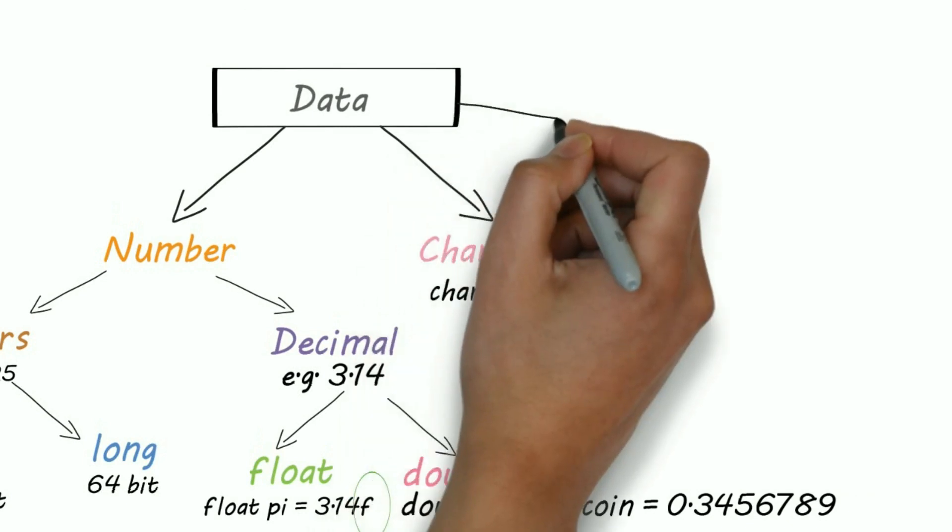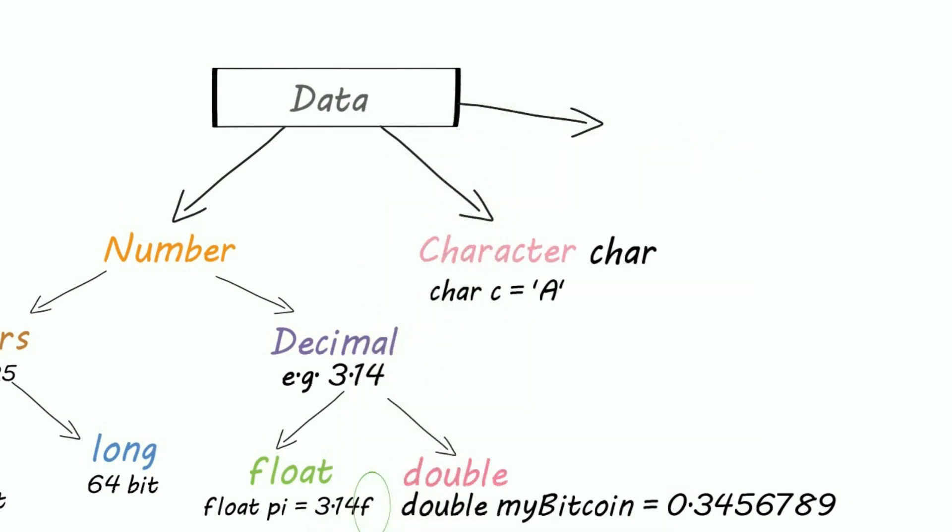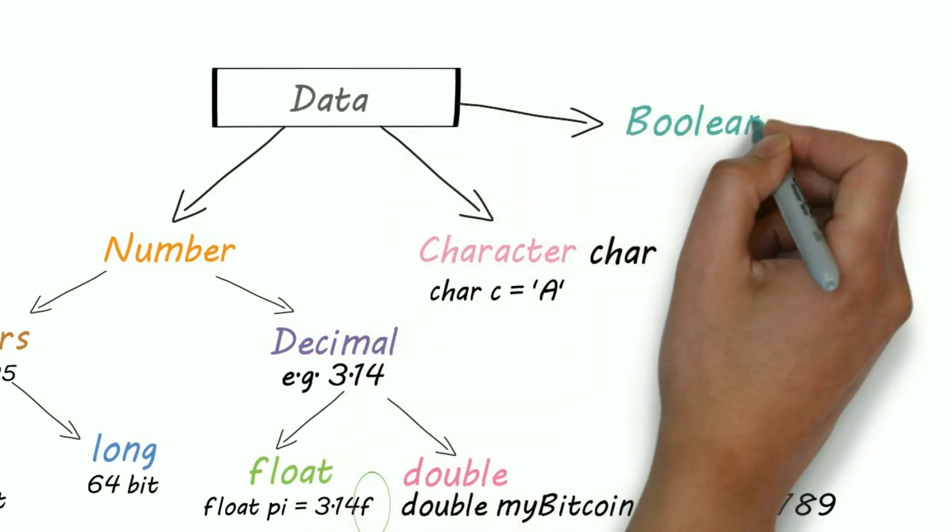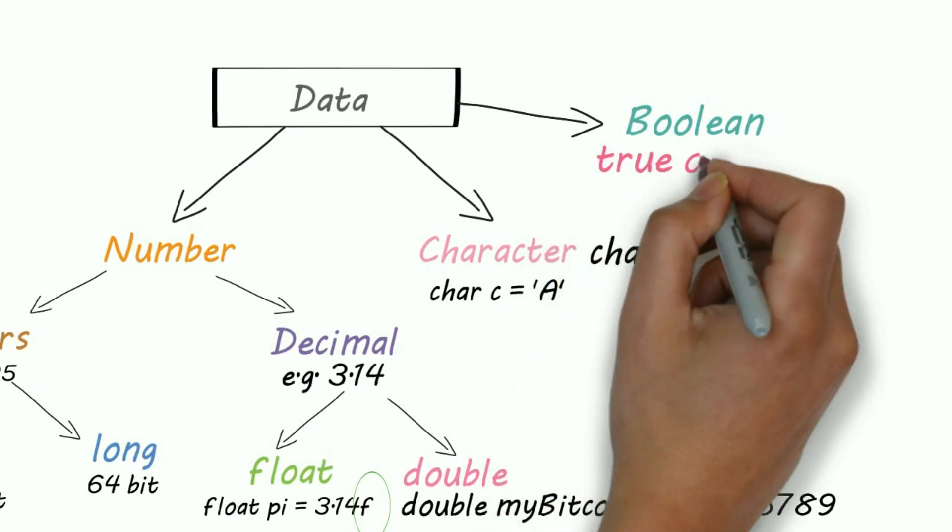And now, last primitive data type is boolean. Many times we use true or false conditions, and for that boolean is perfect.